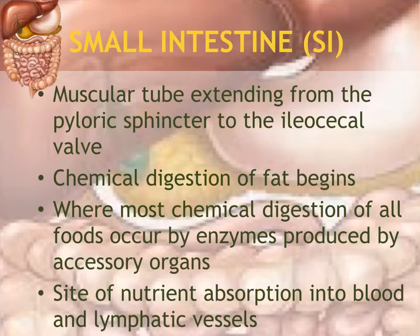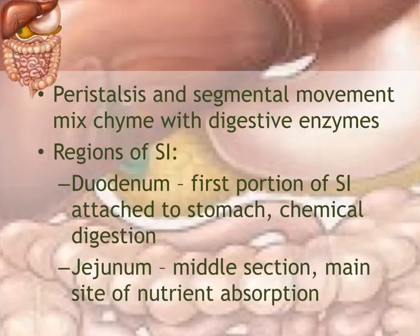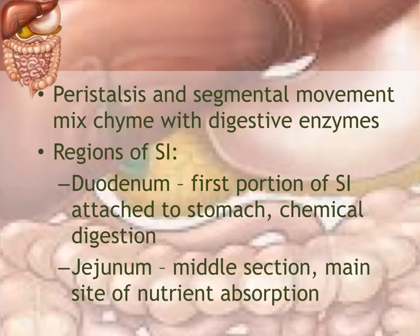The lymphatic vessels are necessary because food comes from the outside and can contain bacteria or other microorganisms that can make you sick, so the lymphatic vessels clean those up. Primary movement in the small intestine is peristalsis and segmental movement. Chyme is the watery substance of the digestive juices from the stomach mixed with food, and it continues on into the small intestine.